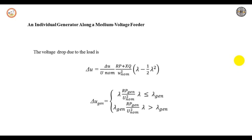Moving on, consider an individual generator along a medium voltage feeder. Consider a medium voltage feeder with a total resistance R and reactance X, which is loaded with active power P and reactive power Q. It is assumed that the load is uniformly distributed along the feeder and the resistance and reactance per unit length remain the same throughout. A generator producing active power P-gen at unity power factor is connected to the feeder at a location Lambda equal to Lambda-gen.